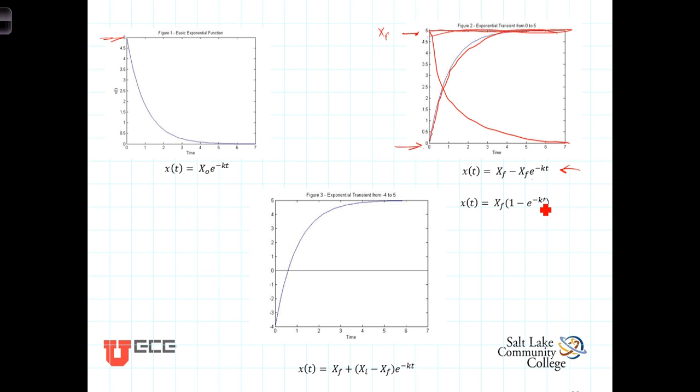The final situation that we're interested in is where the voltage or current on the capacitor or the inductor starts at some non-zero value that we're going to call x naught, or in this case we're going to call it x sub i for the initial value. And it's going to go to some final value, x sub f. And this function here describes that movement.